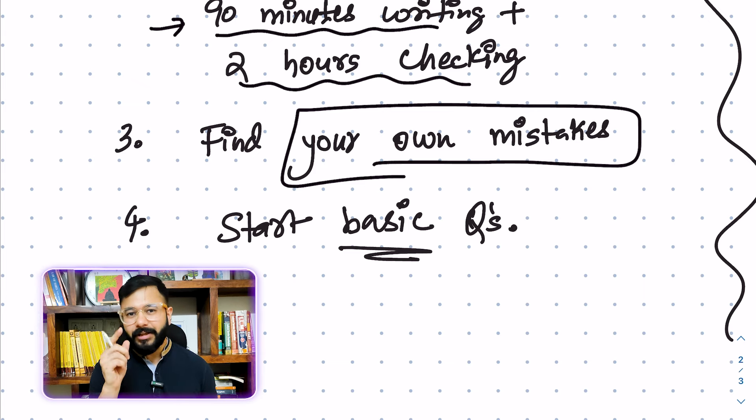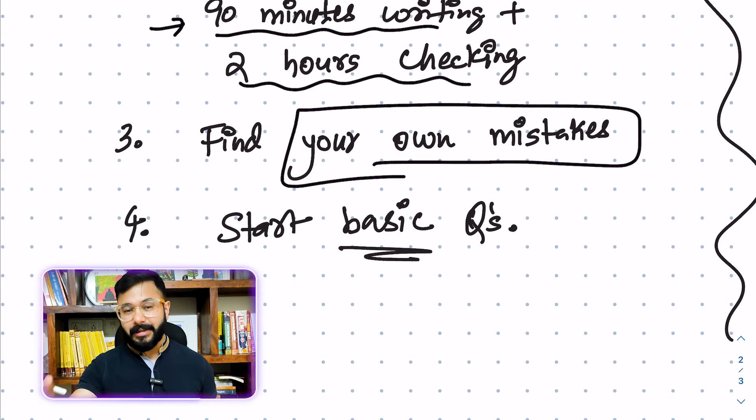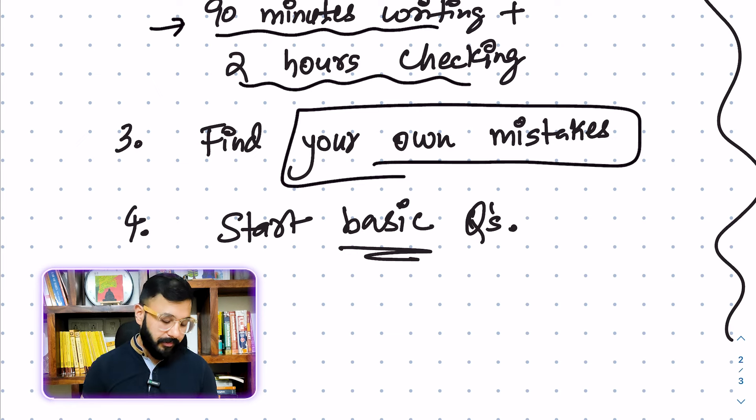Once you have this critical method of going through every answer that you've written, once you change the wiring of your brain in such a way that instead of just trying to appreciate your performance, you're trying to critically evaluate your performance, you're not judging yourself. You're just trying to critically evaluate yourself because you know that final examination of your answers, those have to be perfect.